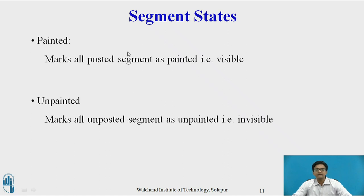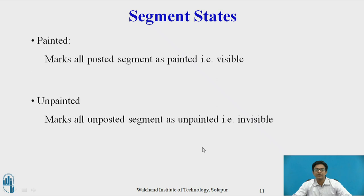There are two segment states: painted and unpainted. Painted marks all posted segments as visible, and unpainted marks all unposted segments as invisible. Painted segments are visible; unpainted segments are invisible, meaning they are not sent to the display device.